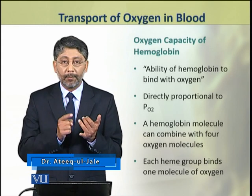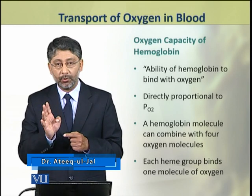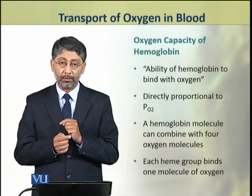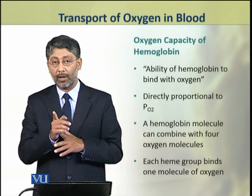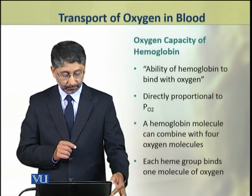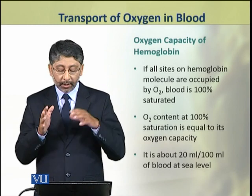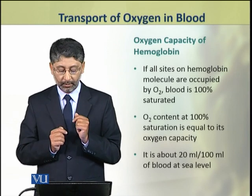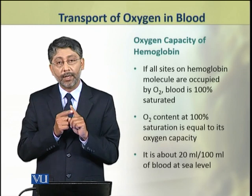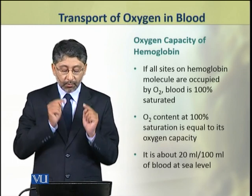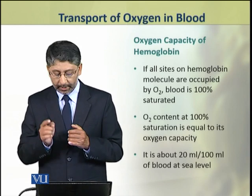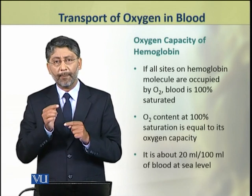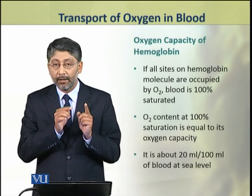A hemoglobin molecule can bind with 4 molecules of oxygen. If all sites on hemoglobin molecules are occupied by oxygen, the blood is 100% saturated. The oxygen content at 100% saturation level in blood is equal to the oxygen capacity, and it is about 20 milliliters per 100 ml of blood at sea level at 1 atmosphere, with a partial pressure of oxygen at about 115 millimeter mercury.